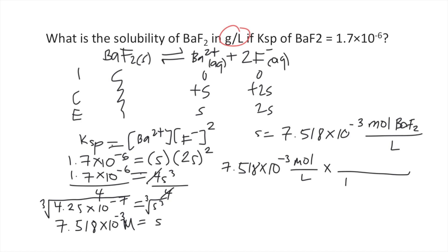So 1 mole of BaF2 is equivalent to 175.32 grams. As you can see, the moles will cancel out and you're left with grams on top and liters in the denominator or grams per liter.